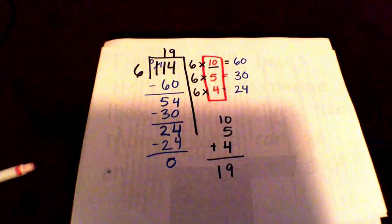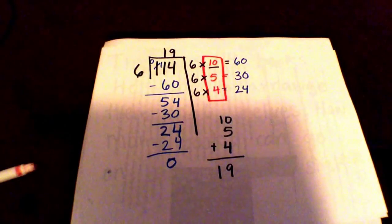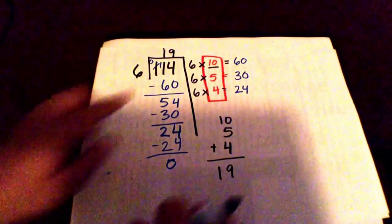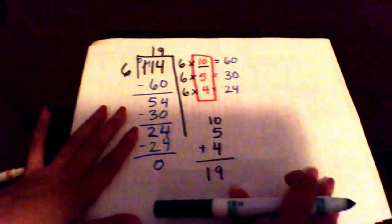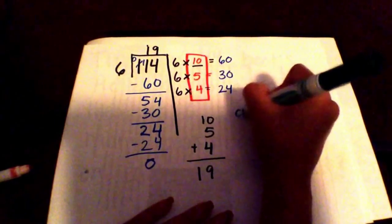But I need to check my work. By checking my work, I need to multiply my numbers here on the outside, which are 19 times 6. So I'm going to check.